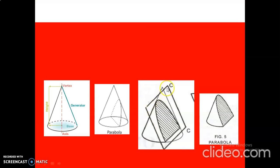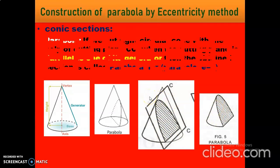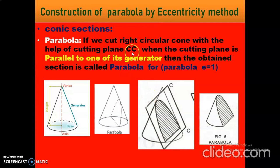This CC is the cutting plane. So here the CC cutting plane is parallel to the generator. When the cutting plane is parallel to one of its generators and we cut the right circular cone, the obtained section is called parabola. For parabola, eccentricity is equal to one.